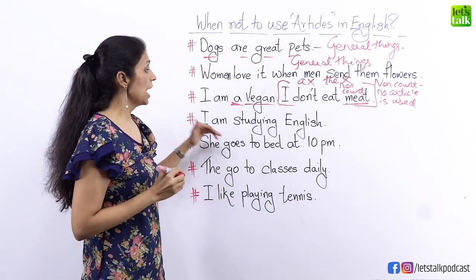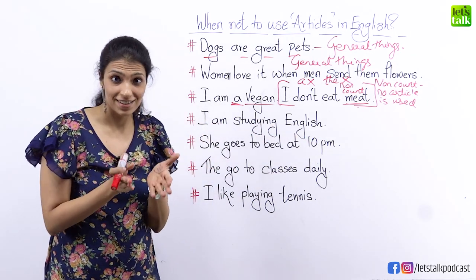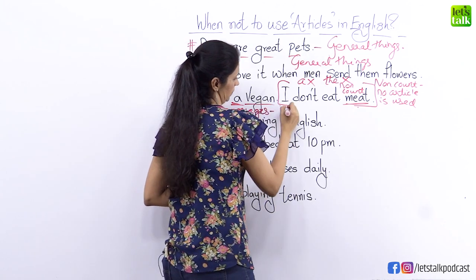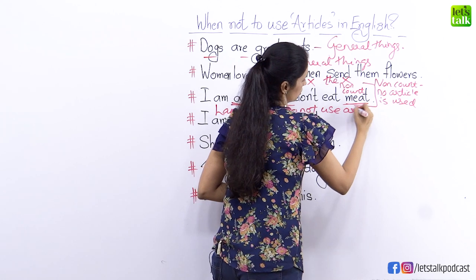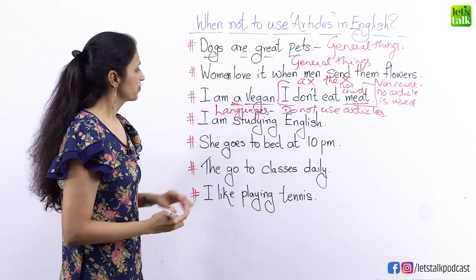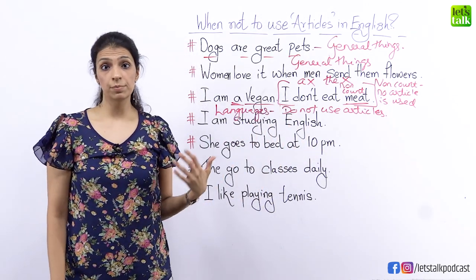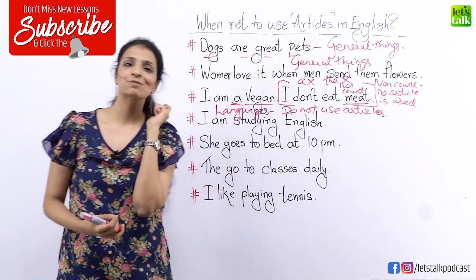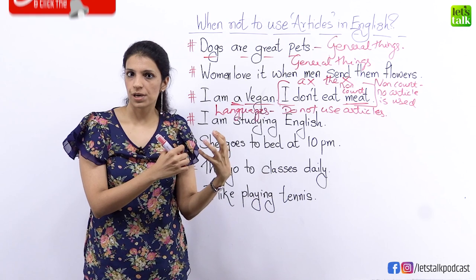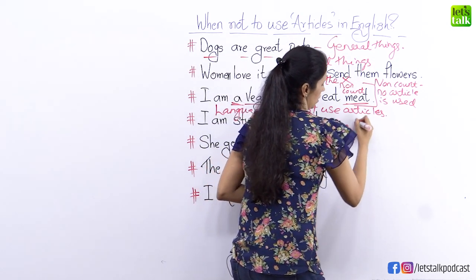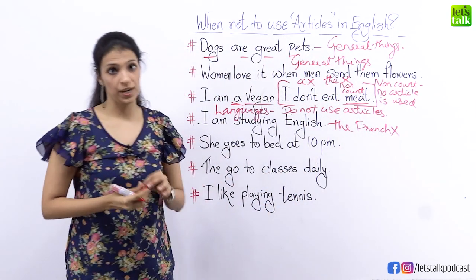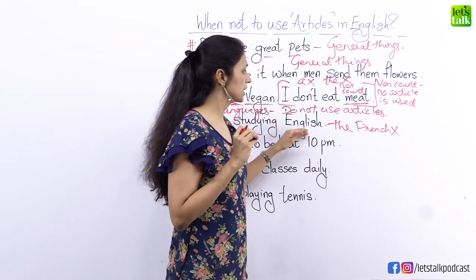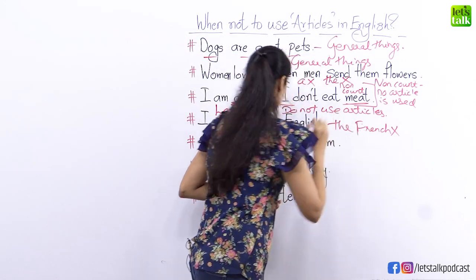Next rule: for languages, do not use articles. 'I am studying English' — a lot of people incorrectly say 'I am studying the English' or 'I am learning the English.' Similarly, 'I can't speak French' — you would not say 'I can speak the French.' When you use a word like French or English as a language, you do not use an article. So remember: when you talk about a particular language, no article.